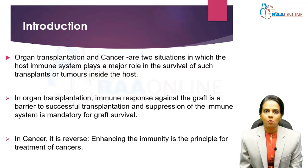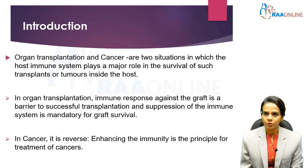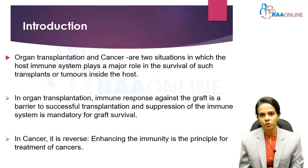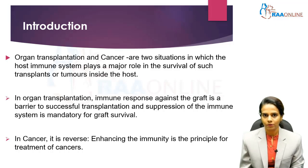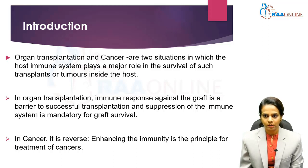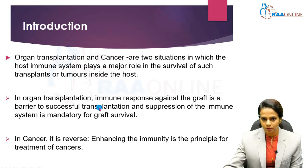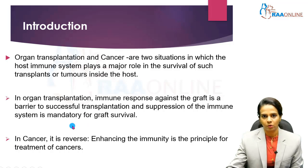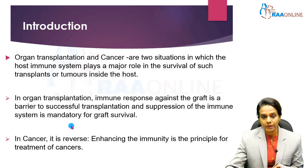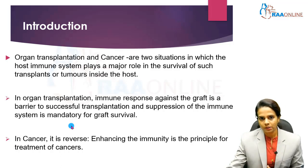Moving on to the introduction: organ transplantation and cancer are two situations in which the host immune system plays a major role in the survival of transplants or tumors inside the host. In organ transplantation, the immune response against the graft is a barrier to successful transplantation, and suppression of the immune system is mandatory for graft survival.